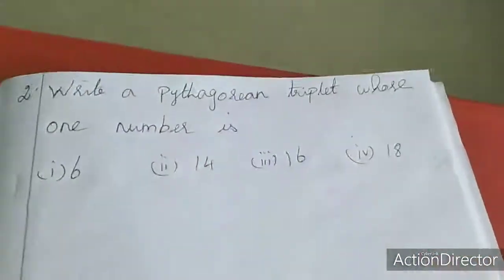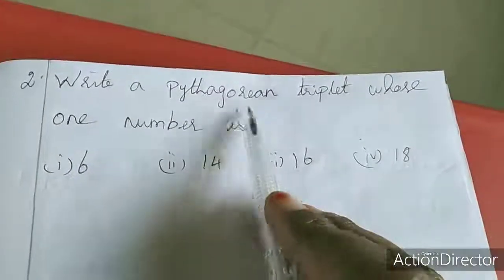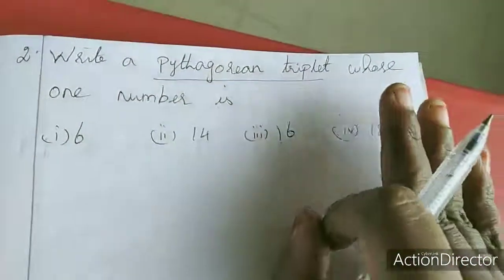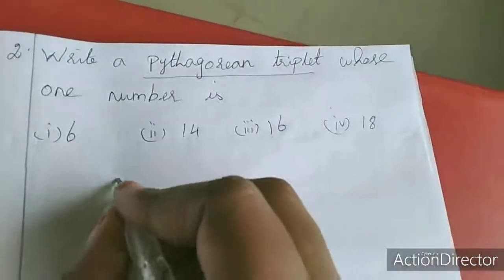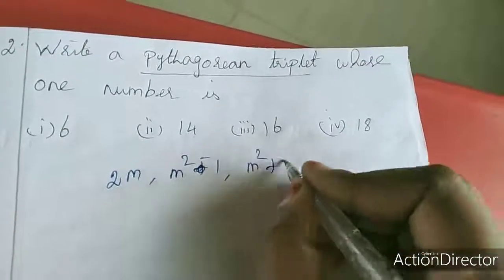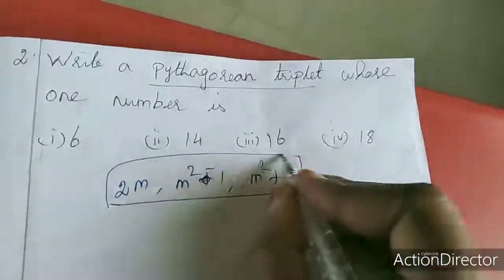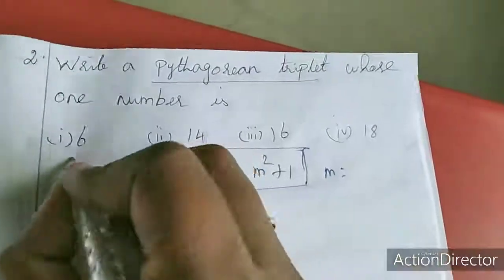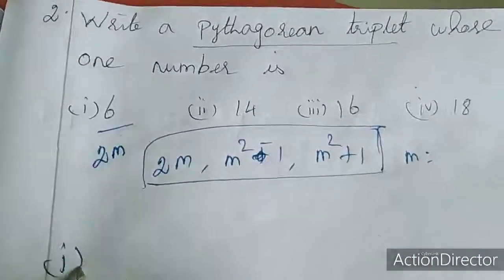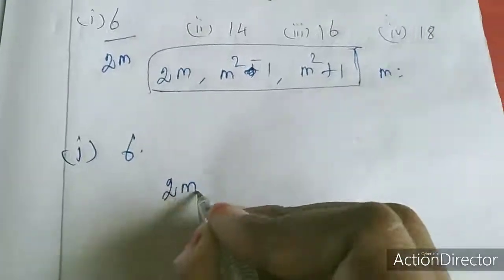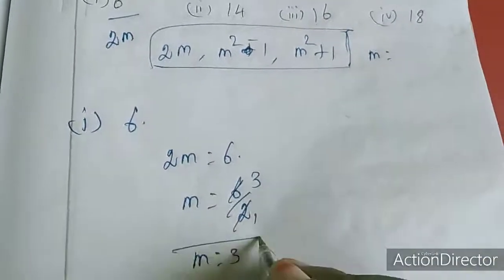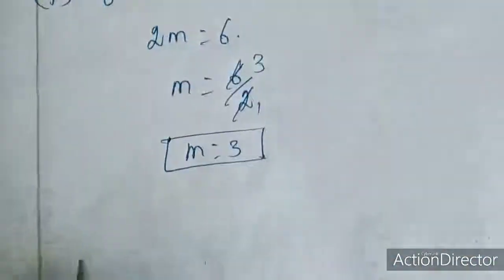Now we will move to the second sum. Here Pythagorean triplet whose one number is. If I have Pythagorean triplet then 3 numbers you will find. The formula: 2m, m squared minus 1, then m squared plus 1. First sum I am going to do. First sum is 6. So 2m equal to 6, so m equal to 3. We got the value for m.